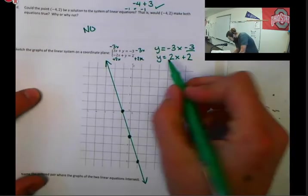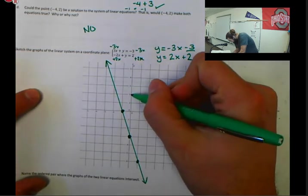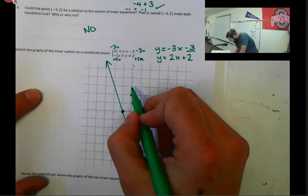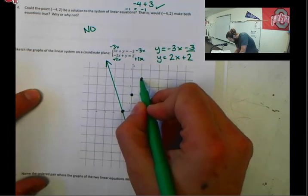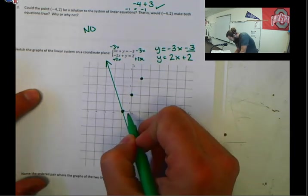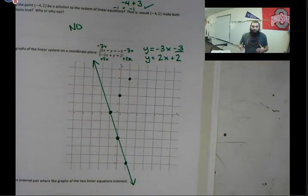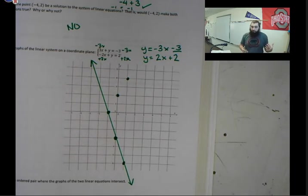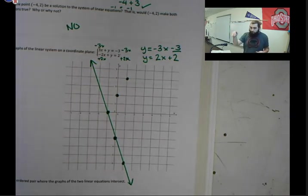Same thing here. y equals 2x plus 2. I'm going to go up to 2. There's going to be my first point. And my slope is 2x. I'm going to go up 1, 2, 1 to the right. And then I'm going to do the same thing going down 1, 2, 1 to the left. Okay. A positive slope, you can go two positive movements or you can go two negative movements. So up and to the right, or you can go down and to the left.